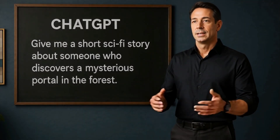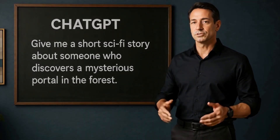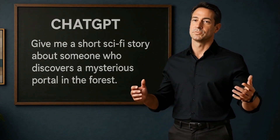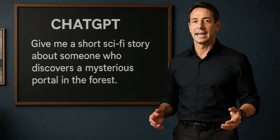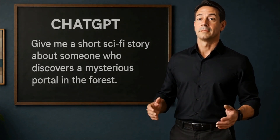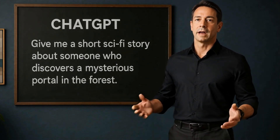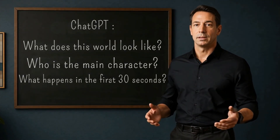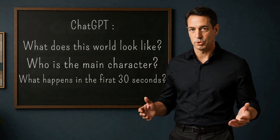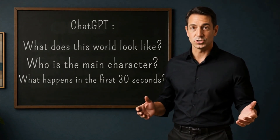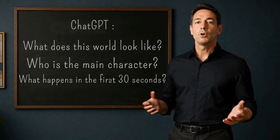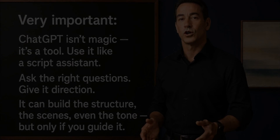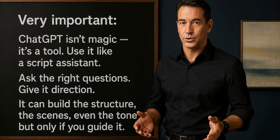Here's where AI comes in. You open ChatGPT and type a simple prompt: 'Give me a short sci-fi story about someone who discovers a mysterious portal in the forest.' You take that idea and shape it. You ask more questions, you refine it, until it feels right. Once you have the idea, it's time to shape it. Open ChatGPT and start building the world. Ask questions like: what does this world look like? Who is the main character? What happens in the first 30 seconds? You're not writing a full movie — you're building a short, focused story.